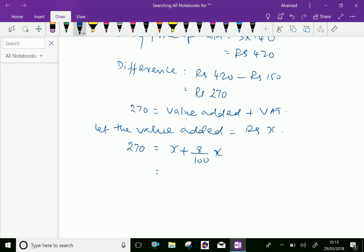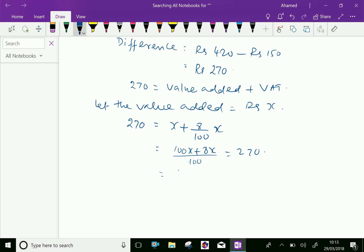Which gives 100 as a common denominator. So, 100 into X plus 8X equal to 270. Therefore, 108X over 100 equal to 270. Therefore, X equal to 270 into 100 over 108, which is equal to 270 into 100 divided by 108, equal to 250, rupees 250.